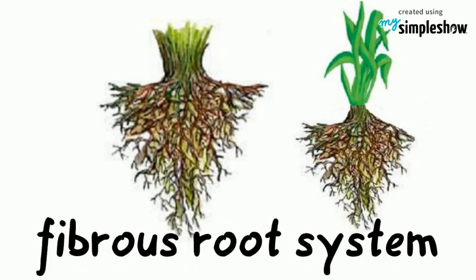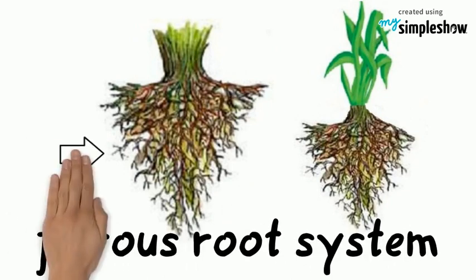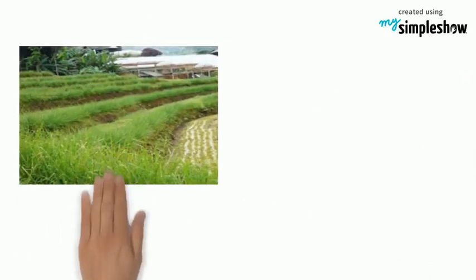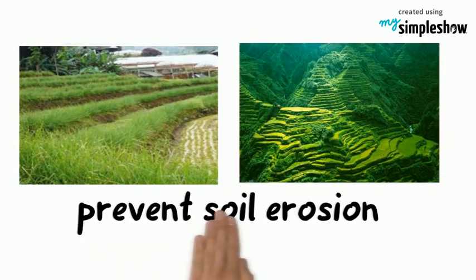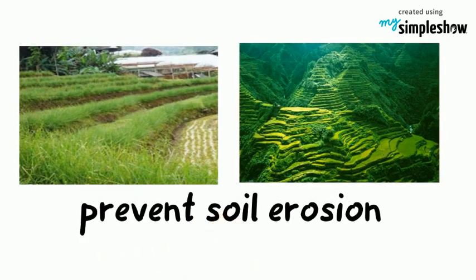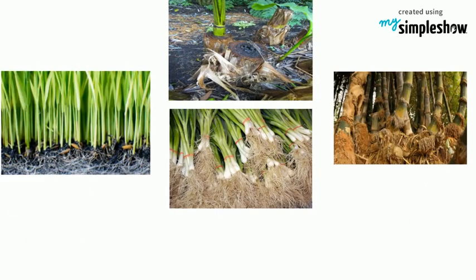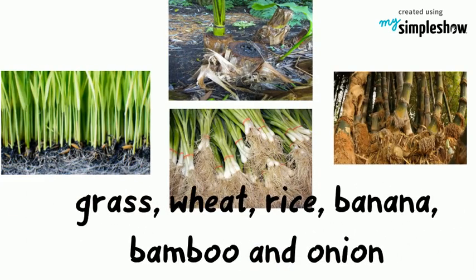The second is the fibrous root system. It consists of many small roots and is located closer to the soil surface. The root system is thick and shallow, which helps prevent soil erosion. Examples of plants with a fibrous root system include grass, wheat, rice, banana, bamboo, and onion.